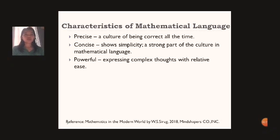Aside from concise, we have the third one. It's powerful. How come that we have said that this powerful word is also a character of mathematical language? Because we can express complex thoughts with relative ease.